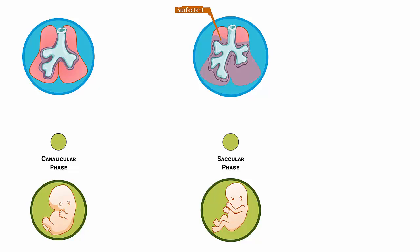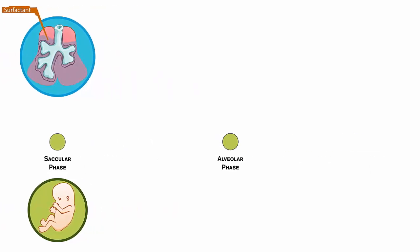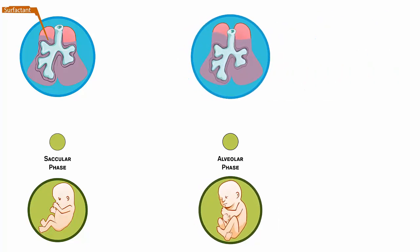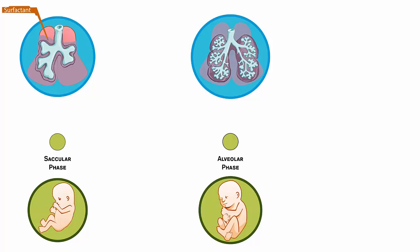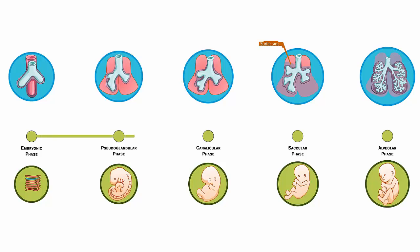The lungs' final phase of development, which extends into early childhood, is the alveolar phase. During this time, more surfactant is produced and more bronchioles and air sacs called alveoli are formed. It is in this final stage that the gas exchange tissues of the lungs are formed, which allow for the transport of more air.